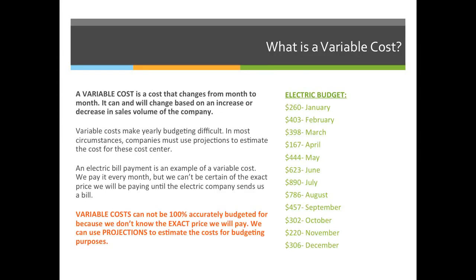A variable cost, on the other hand, is a cost that changes from month to month. It can and will change based on an increase or decrease in sales volume of the company. The example I'd like to give is the electric budget — it's going to vary throughout the year. In January, this company only paid $260 for their electric bill, which is really low for a printing company. But in February, they paid $403. If you were going to budget for this variable cost, you'd have to average it over an entire year and say, well, last year we spent X amount of dollars for electric.